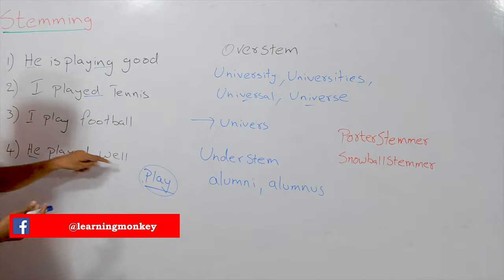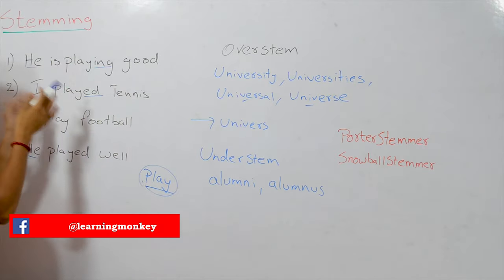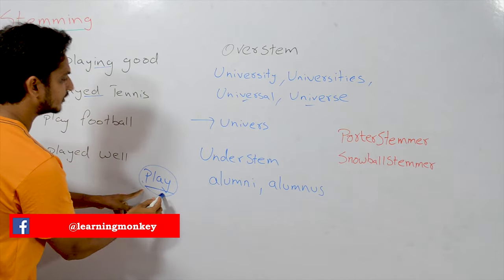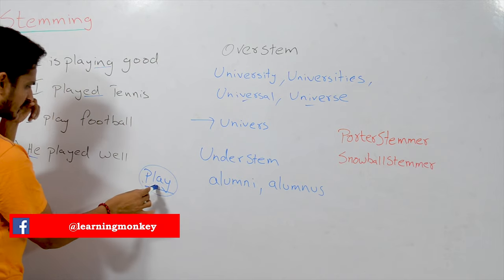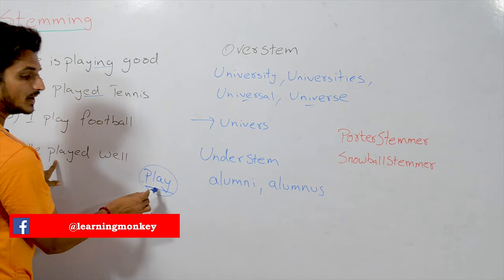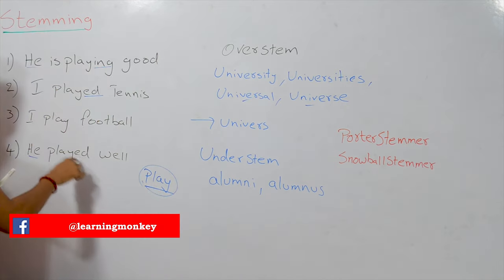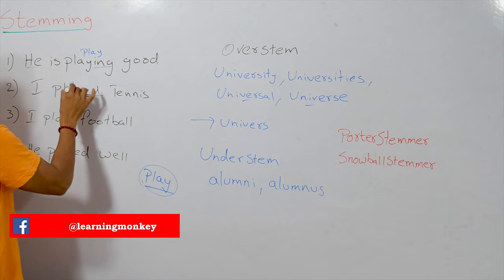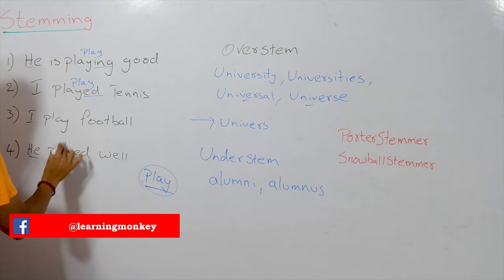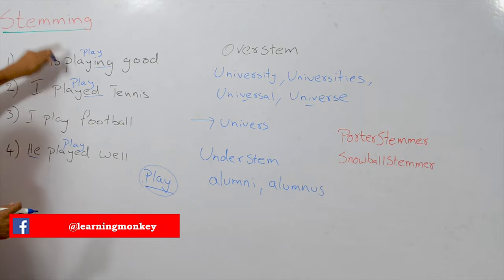That's the meaning of stemming. All these words come from the same stem word called 'play.' What stemming does is it converts the word to the base stem word — 'playing,' 'played,' 'play' all convert into 'play.' After applying the stemming algorithm, all four words are considered as the same word. This is the benefit of stemming.